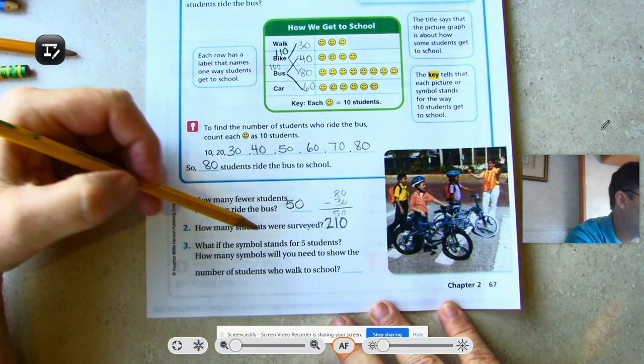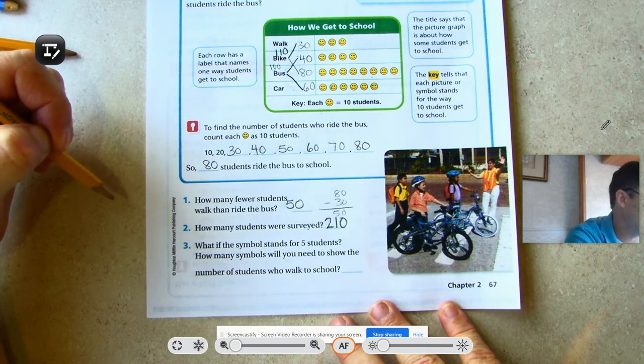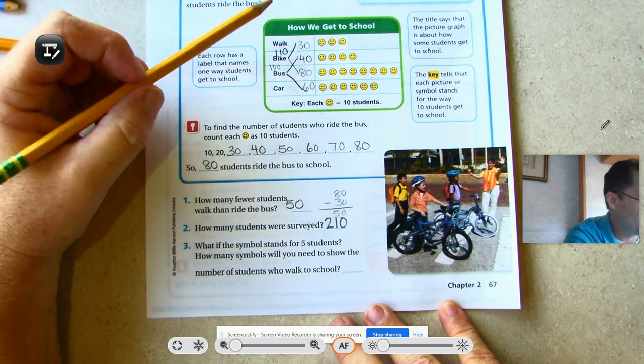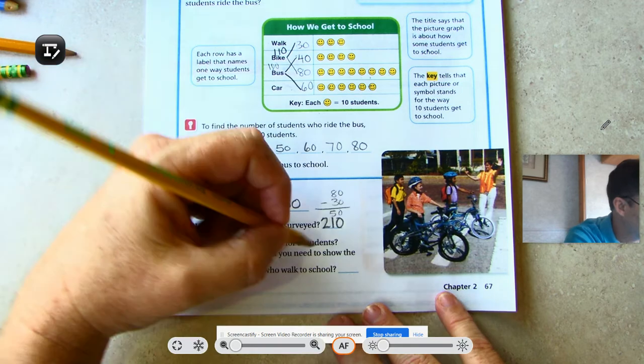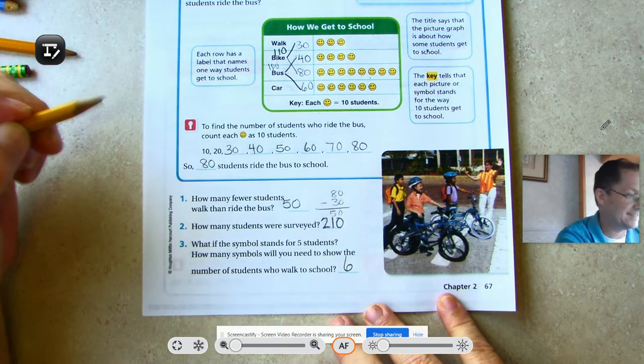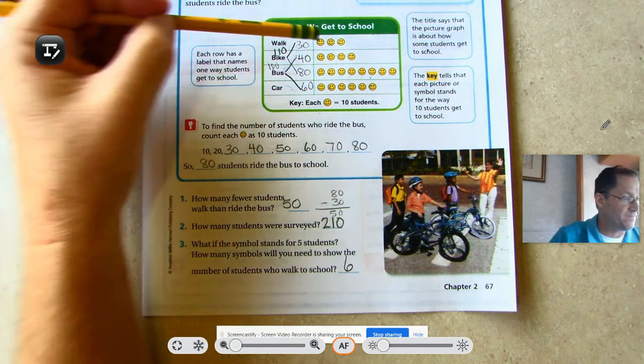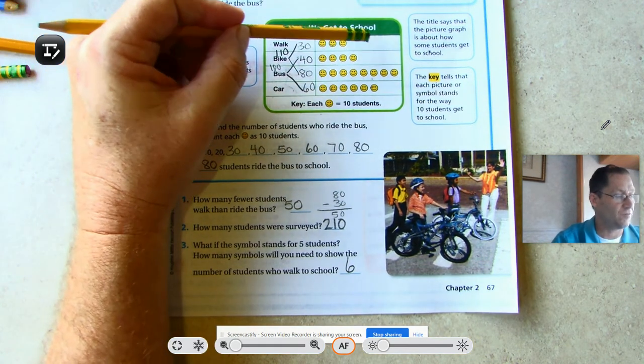What if the symbol stands for five students? How many symbols would you need to show the number of students who walked to school? If it was five, we would need twice as many happy faces. So we would need six. Because this would be 5, 10, 15, 20, 25, 30.